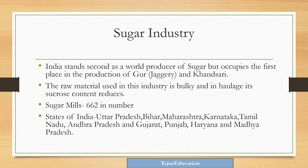There are 662 sugar mills in India. States where we can locate this industry are Uttar Pradesh, Bihar, Maharashtra, Karnataka, Tamil Nadu, Andhra Pradesh, Gujarat, Punjab, Haryana, and Madhya Pradesh. This can be asked as a map question — you have to locate them on the Indian map.